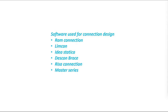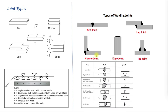Before moving to connection design, you should have fair knowledge on bolts and welds, as these are the main components that are part of connections. Here you can see different types of weld joints: corner, T, edge, and lap. Based on the requirement, we need to provide the weld type. The representation is based on how the connection will be indicated by the symbol — this is the standard arrow we use, and based on the type of weld we indicate it accordingly.